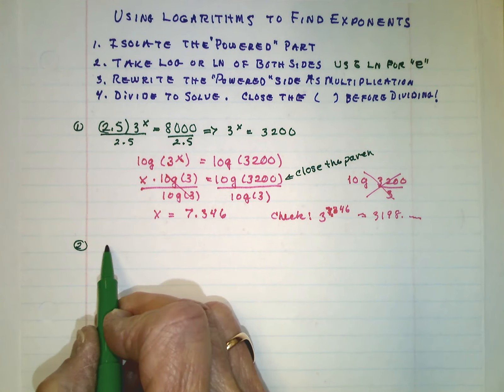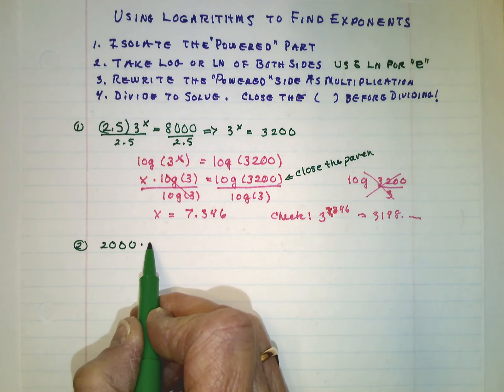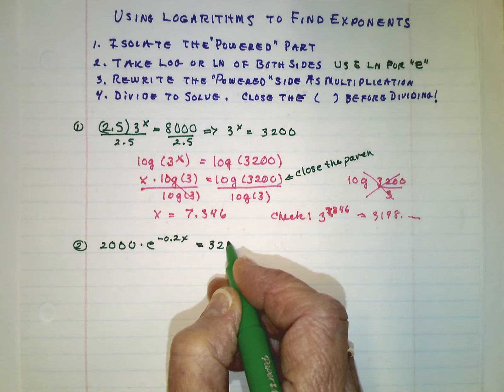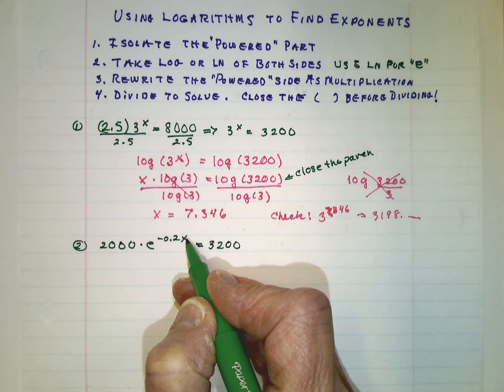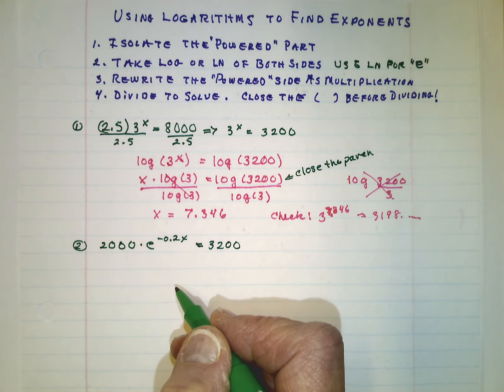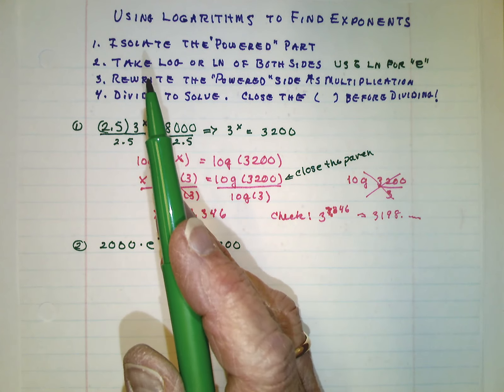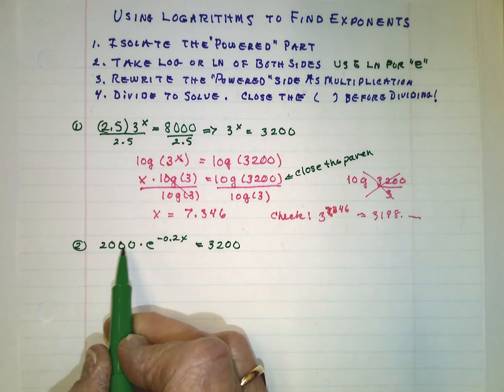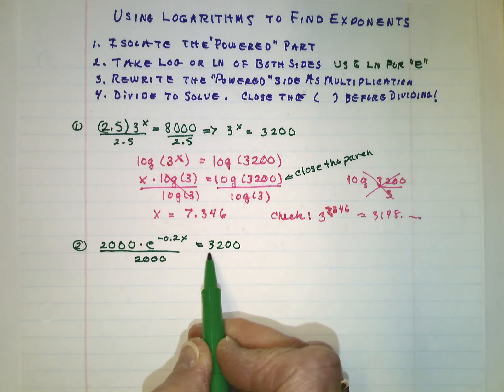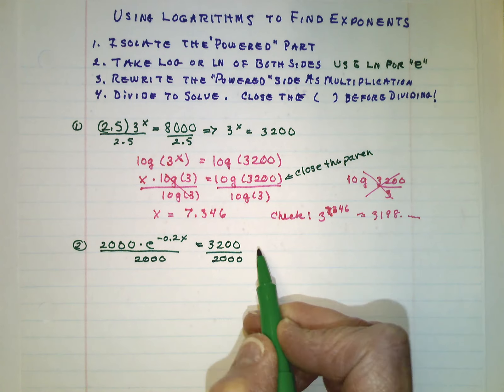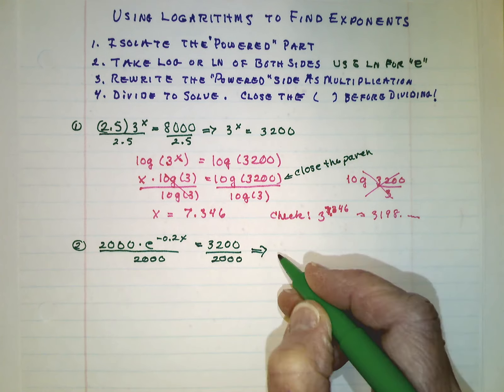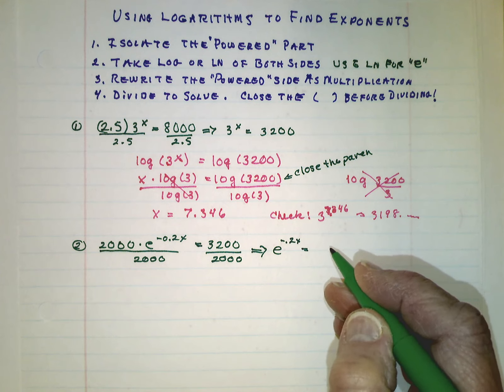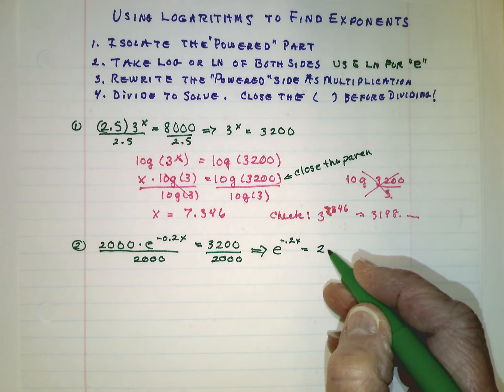Let's try another example. We have 2,000 times e to the negative 2 tenths x equals 3,200. We want to know what to put here to make this come out. Well, we're just going to follow the steps again. This time it's e that's being raised to the power. So we want to clear out the 2,000. That's 2,000 times e. So we'll get rid of it by dividing both sides by 2,000. And now we have just e to the negative 2 tenths of an x equals, and then we take 3,200 divided by 2,000. That comes out to 2.75.